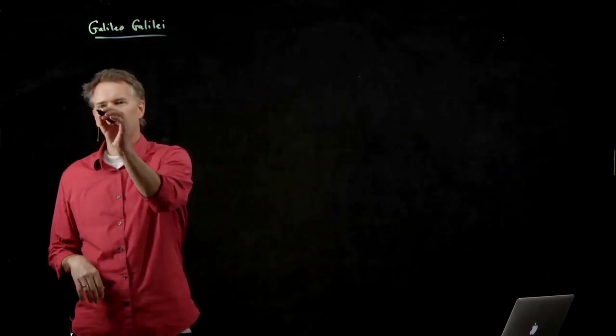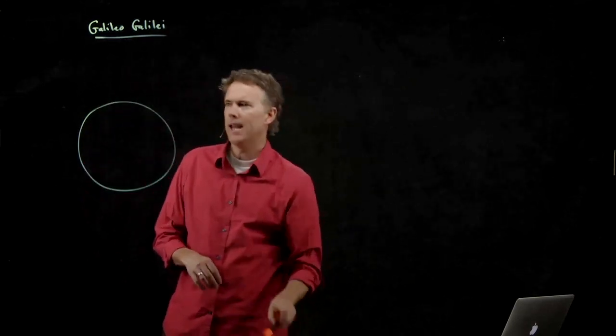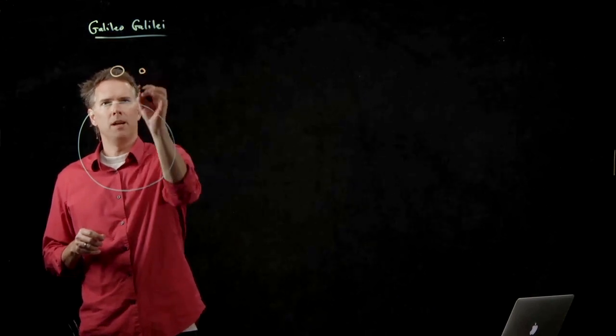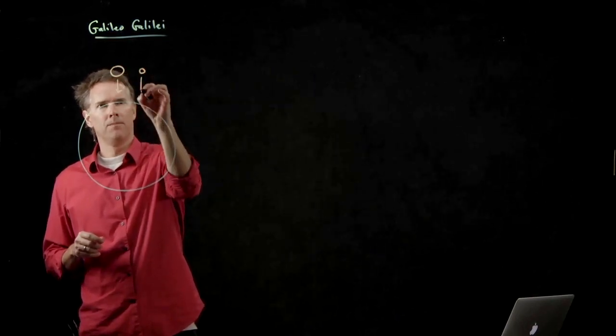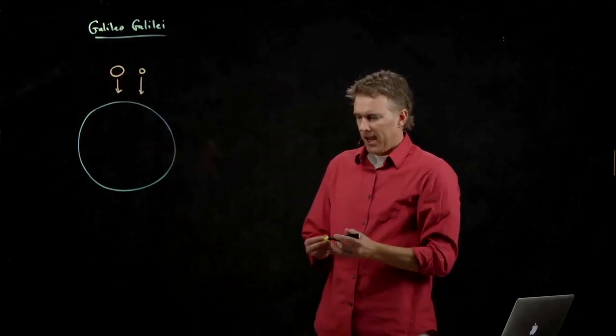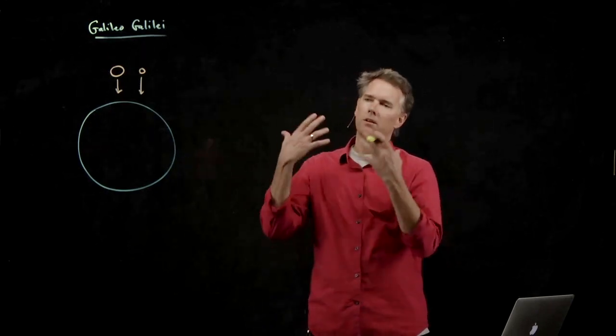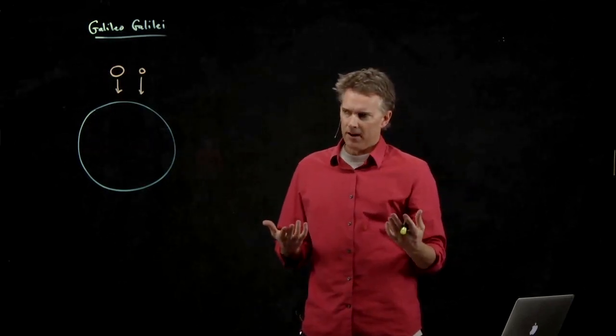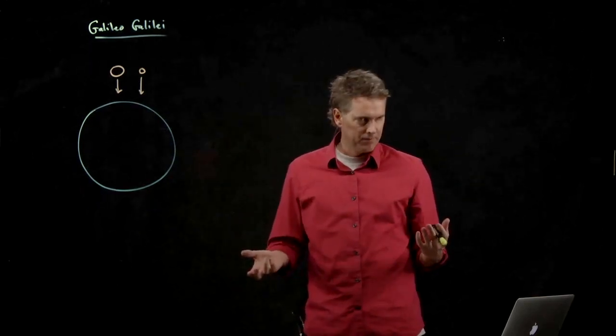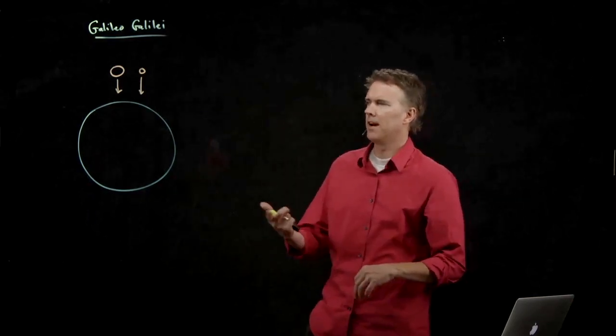Okay, what did Galileo do? Galileo went to the top of the Leaning Tower of Pisa and he dropped a massive cannonball and a very light cannonball, and he showed that those cannonballs hit the ground at the same time. This was really confusing to people because from Aristotle's time people thought heavier objects fall faster. Galileo said, wait a minute, I'm not sure that's really true. Let me test it out.